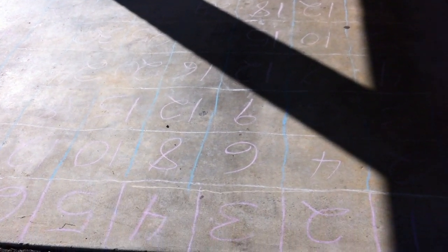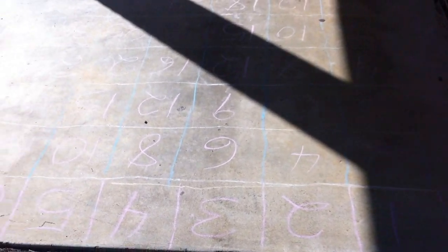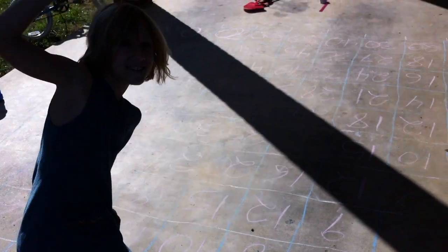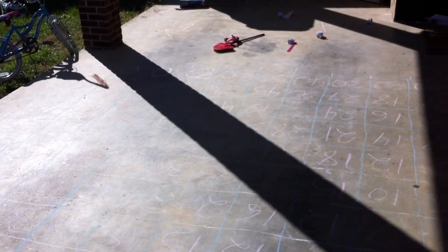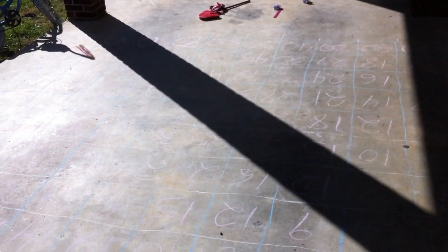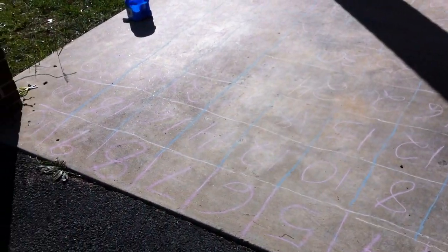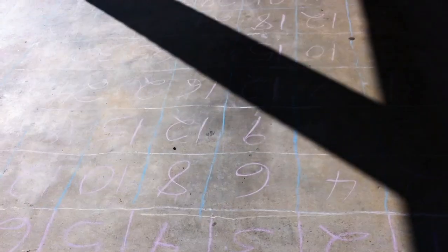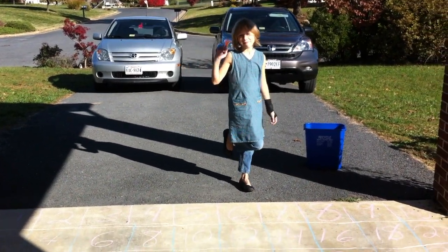This may be a little bit hard to see, but we've drawn a grid on the carport, and it has all of the numbers in the multiplication table from 1 to 10. So we have a game to play with this.